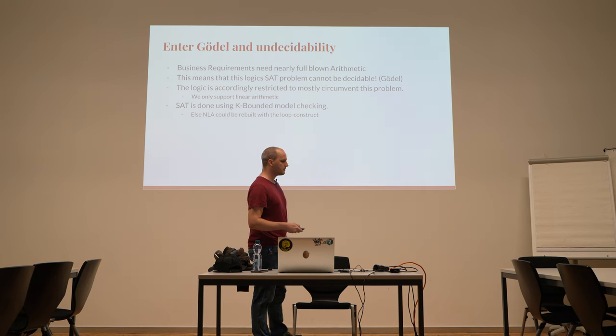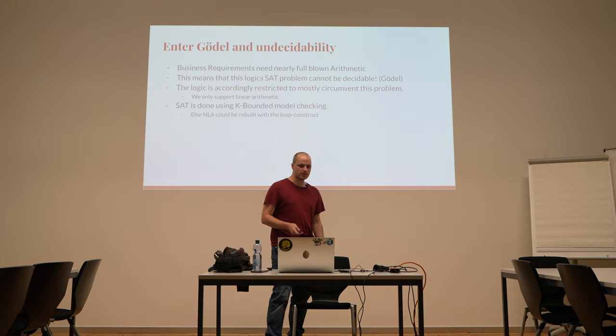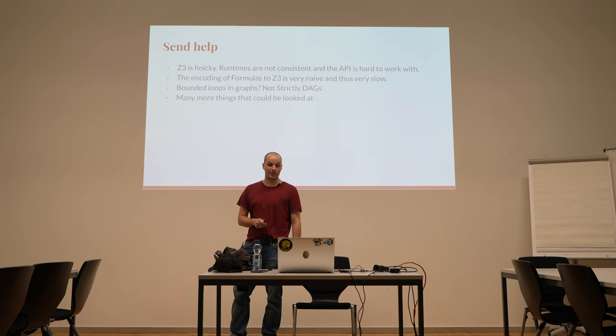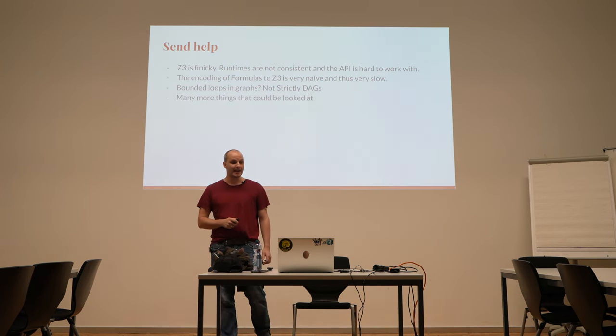To circumvent this, we used a technique called k-bounded model checking, which you'll see in literature for systems of this kind. What you do is set an arbitrary bound and unroll the loops: you take the content of the loop and sequence it zero times, one time, two times, up to some arbitrary number K. This gives you a finite number of problems which you run individually. That restores decidability because we've eliminated all the things that made it undecidable.